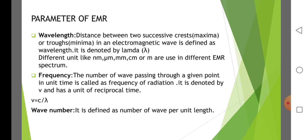Frequency. The number of waves passing through a given point in unit time is called the frequency of radiation. It is denoted by nu and has units of reciprocal of time. Nu is equal to c divided by lambda. Wave number is defined as the number of waves per unit length.